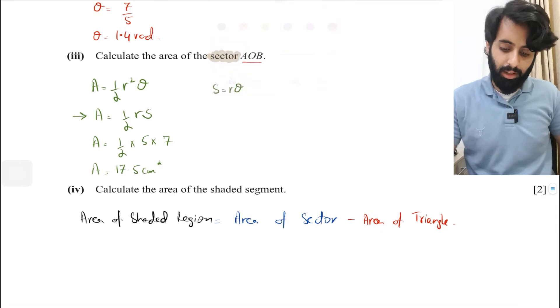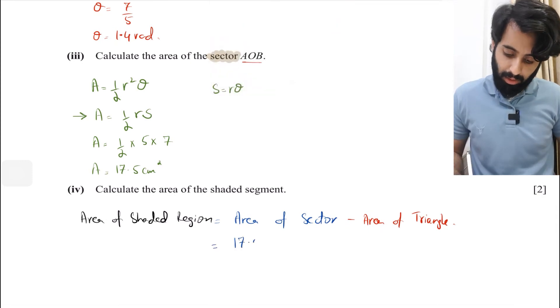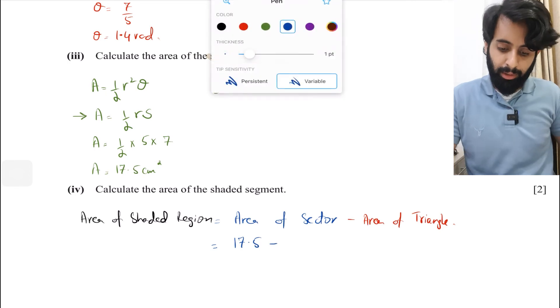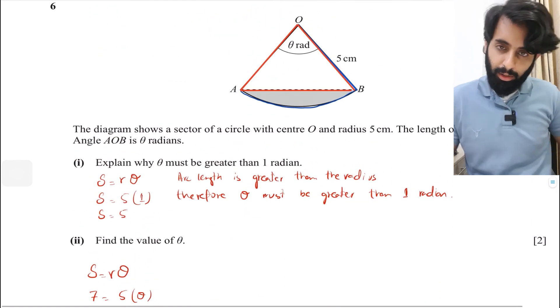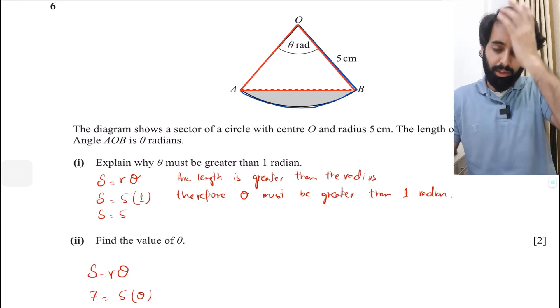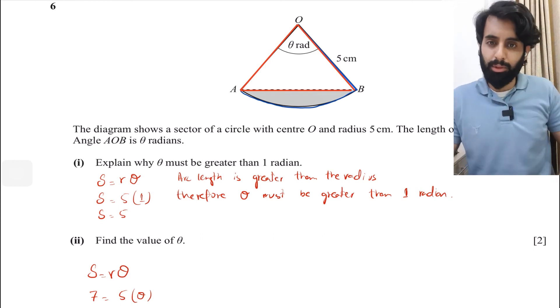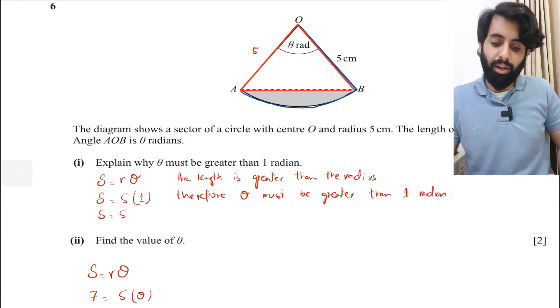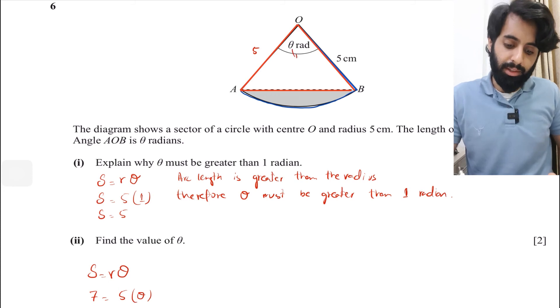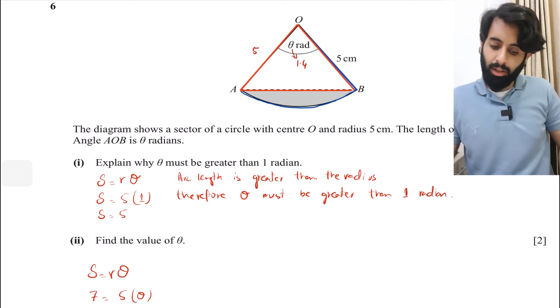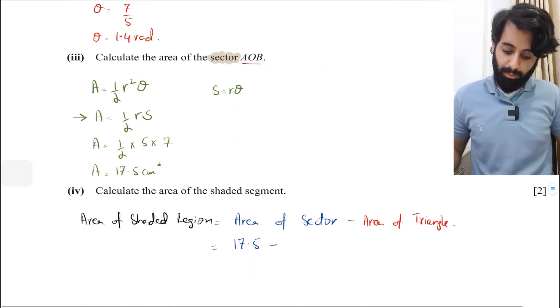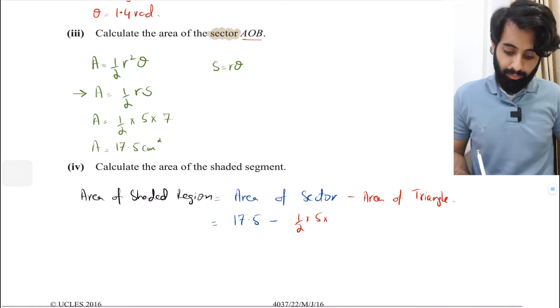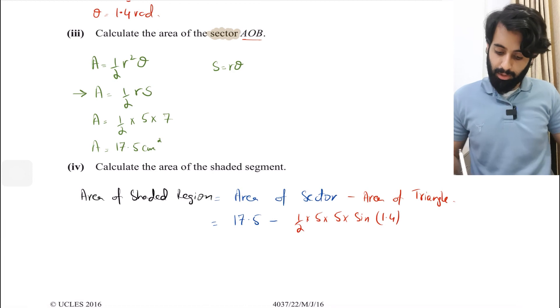As far as area of triangle goes, there's a formula half base times height, but we don't necessarily have to use that because we have two sides. Since it's a sector, the other length is the radius which is 5, and we have an included angle θ which is 1.4. So we can use the formula half times a times b times sine c, where c is the included angle 1.4.